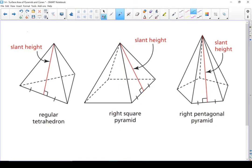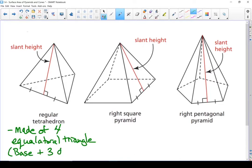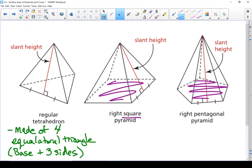A couple more terms to go through. If it is a regular tetrahedron, the base is actually the same shape as those lateral faces. And because it's a regular tetrahedron, each of those triangles is an equilateral triangle. On these other two pyramids, the name depends on the shape of the base. This one right here has a square base, so it's a right square pyramid. And this one over here has a pentagon on the bottom, so it's a right pentagonal pyramid.